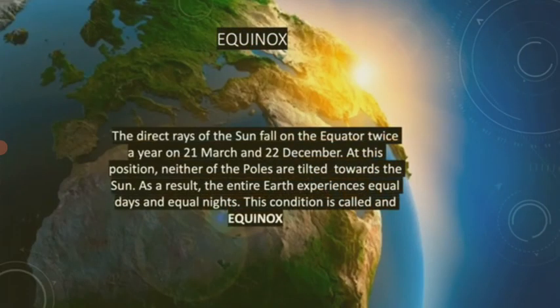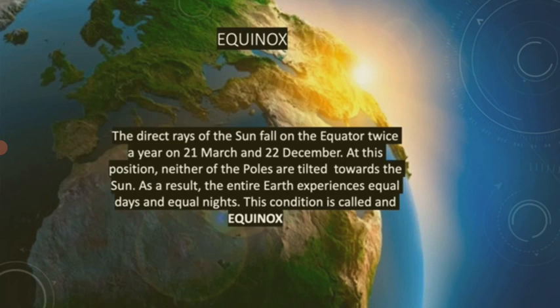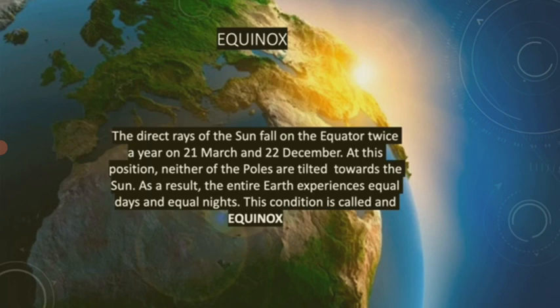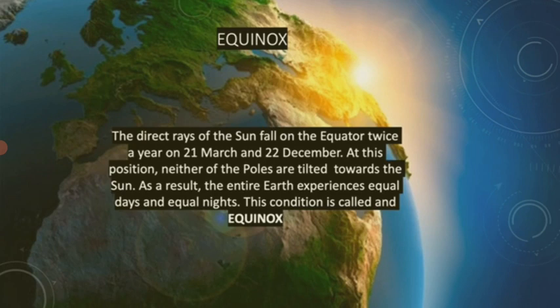Now let's talk about equinox. Equinox is also one of the special positions of the Earth. The direct rays of the Sun fall on the equator twice a year, on 21st March and on 23rd September. At this position, neither of the poles are tilted towards the Sun. As a result, the entire Earth experiences equal days and equal nights. This condition is called equinox.